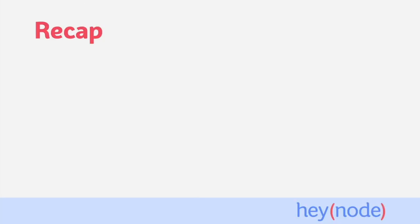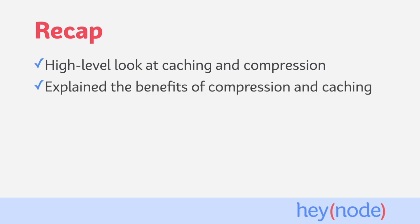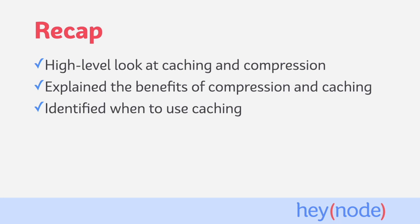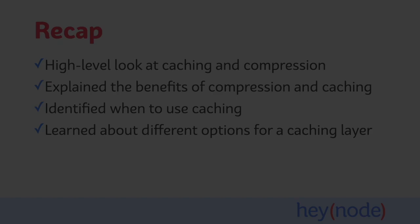To recap, in this tutorial we gave an overview of what caching and compression are in relation to an Express server. We explained that compression reduces bandwidth and improves download speeds by reducing the size of payloads. And that caching reduces latency and load on a server by storing the result of operations somewhere that they can be quickly accessed. We talked about only caching GET requests and requests that don't alter data. And we learned about some of the pros and cons of in-memory caches versus external dedicated caches.